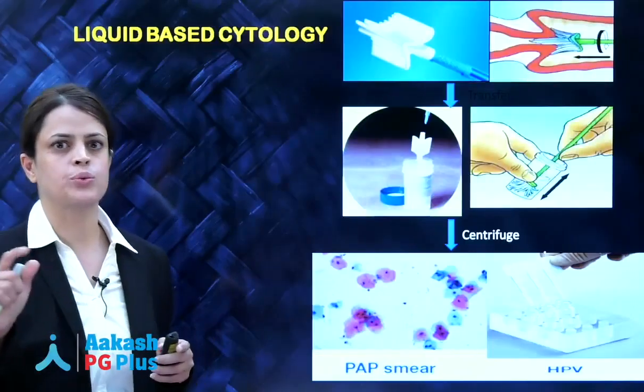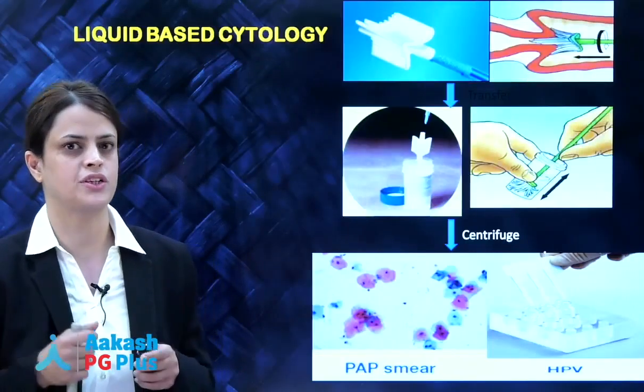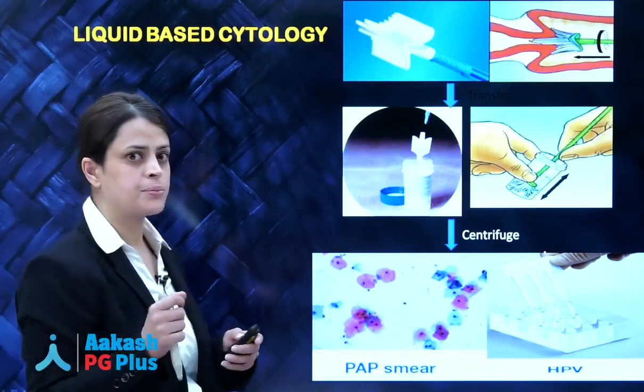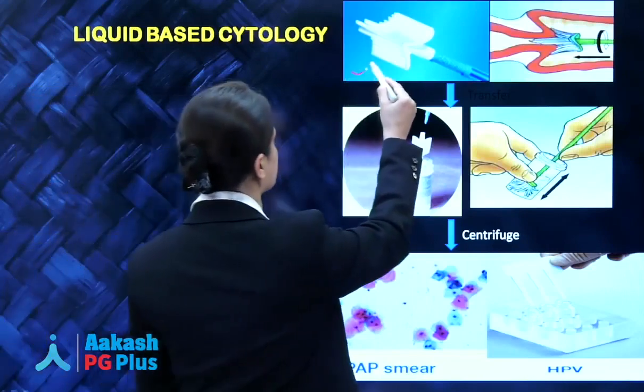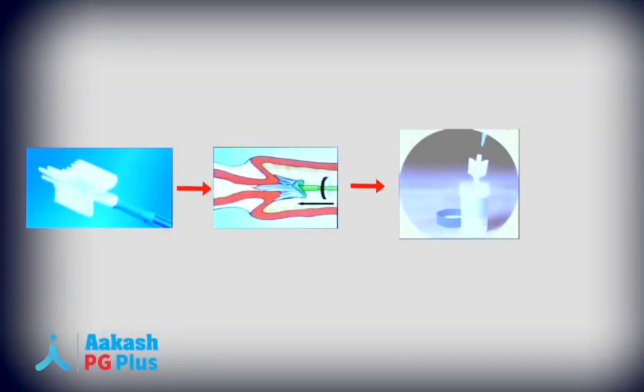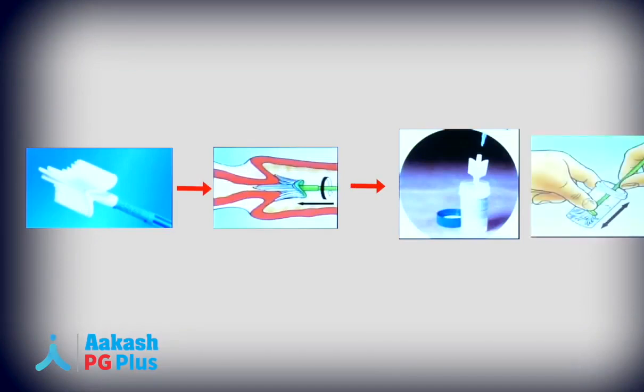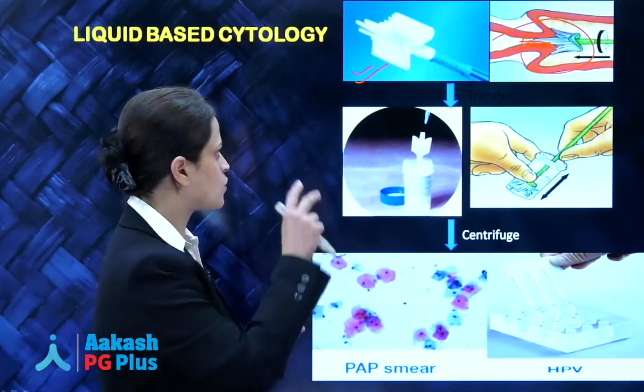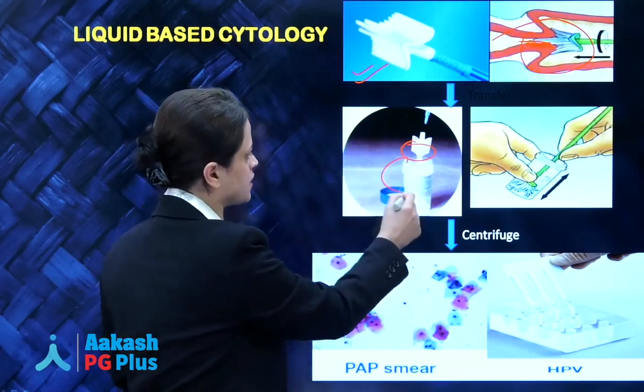Liquid-based cytology is performed using a cervical broom. It is used in the same way as an Ayre spatula — rotated 360 degrees over the ectocervix with the longest bristles protruding into the endocervix and capturing endocervical cells. The brush is then removed and shaken vigorously in a liquid preservative solution so that all the cells picked up by the brush are transferred into the liquid solution.